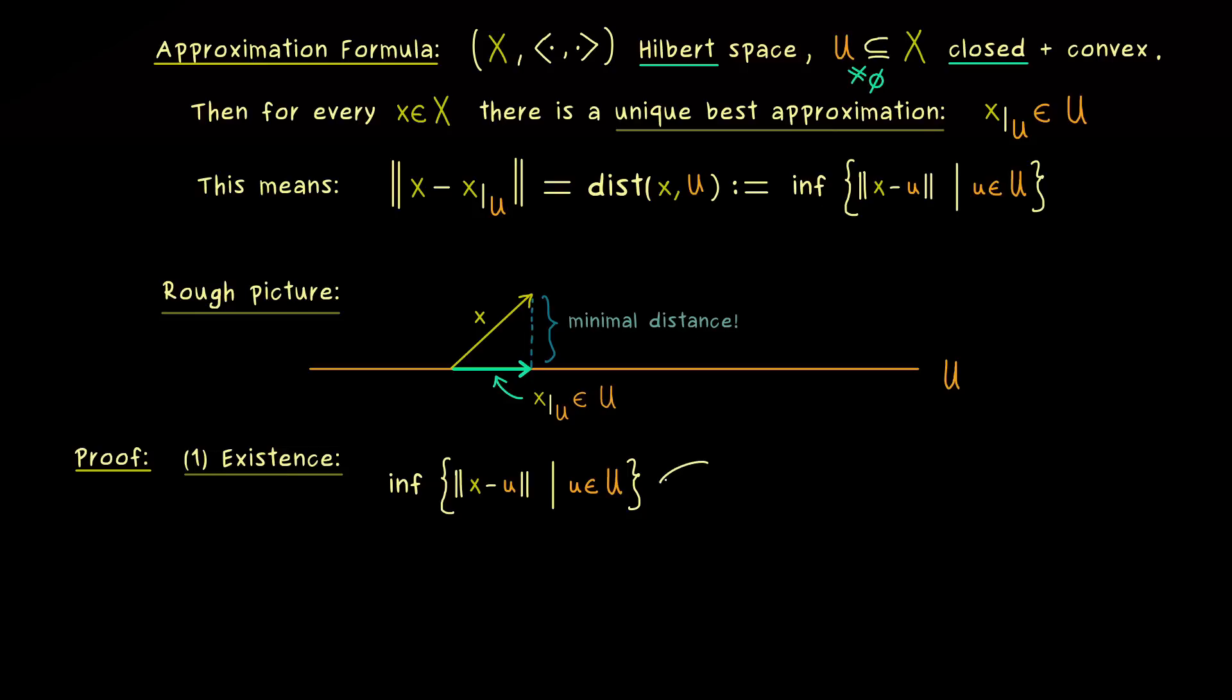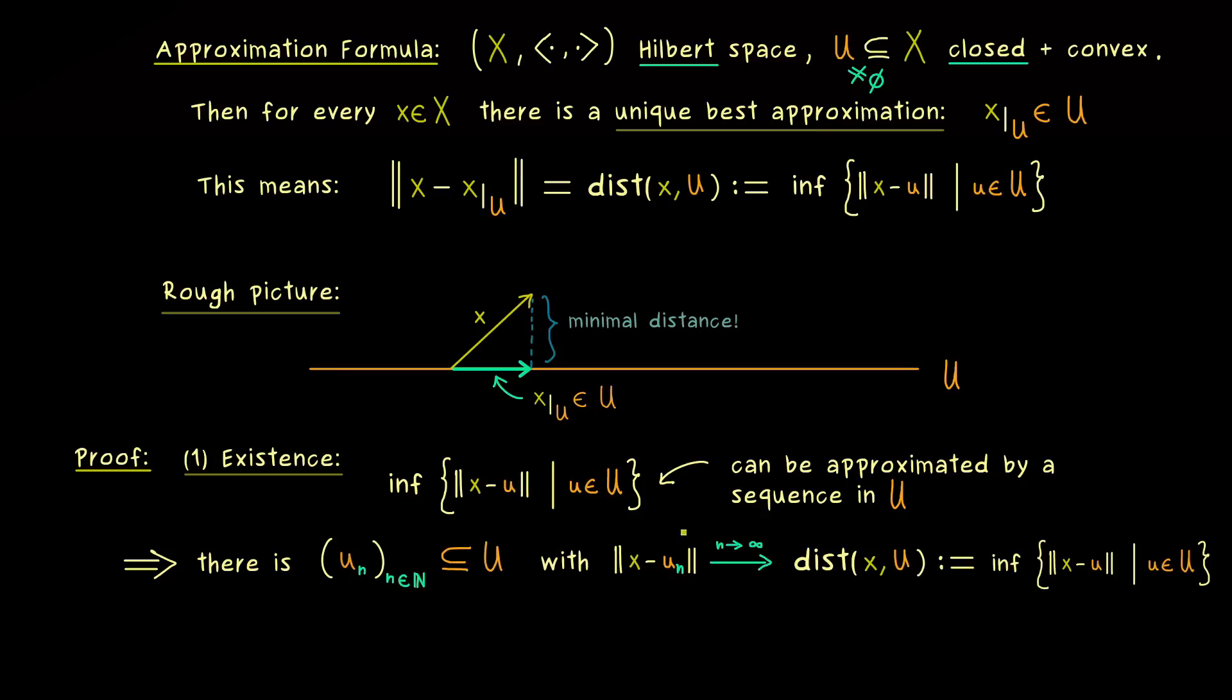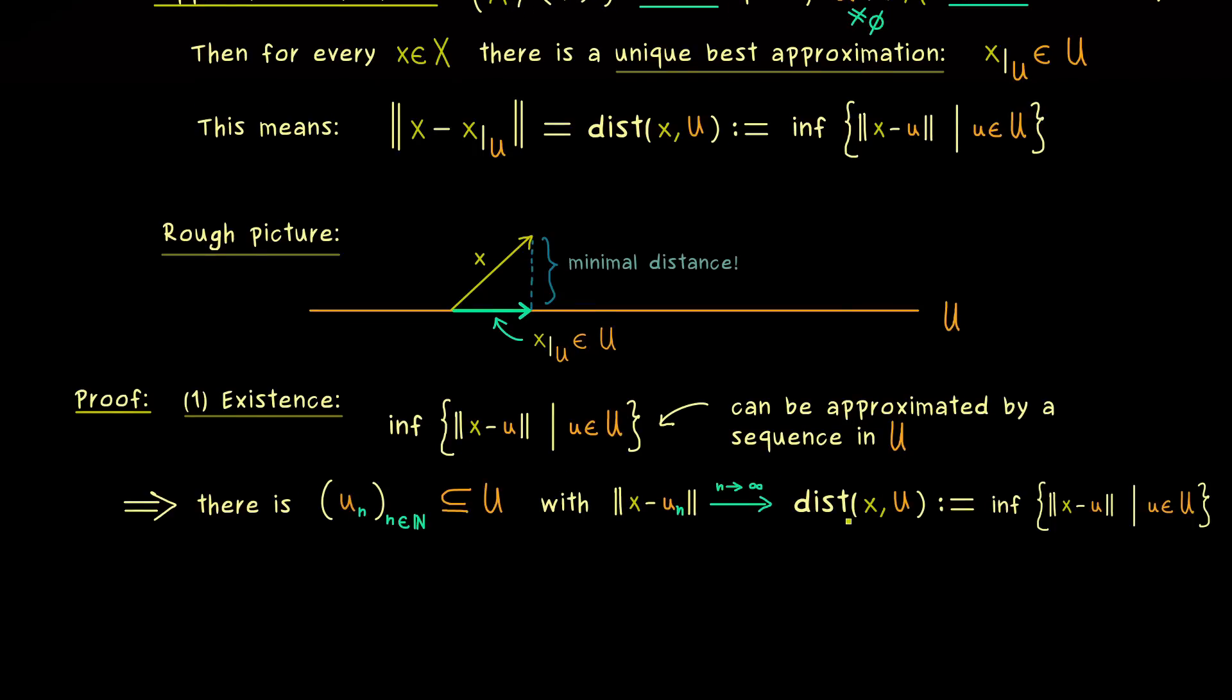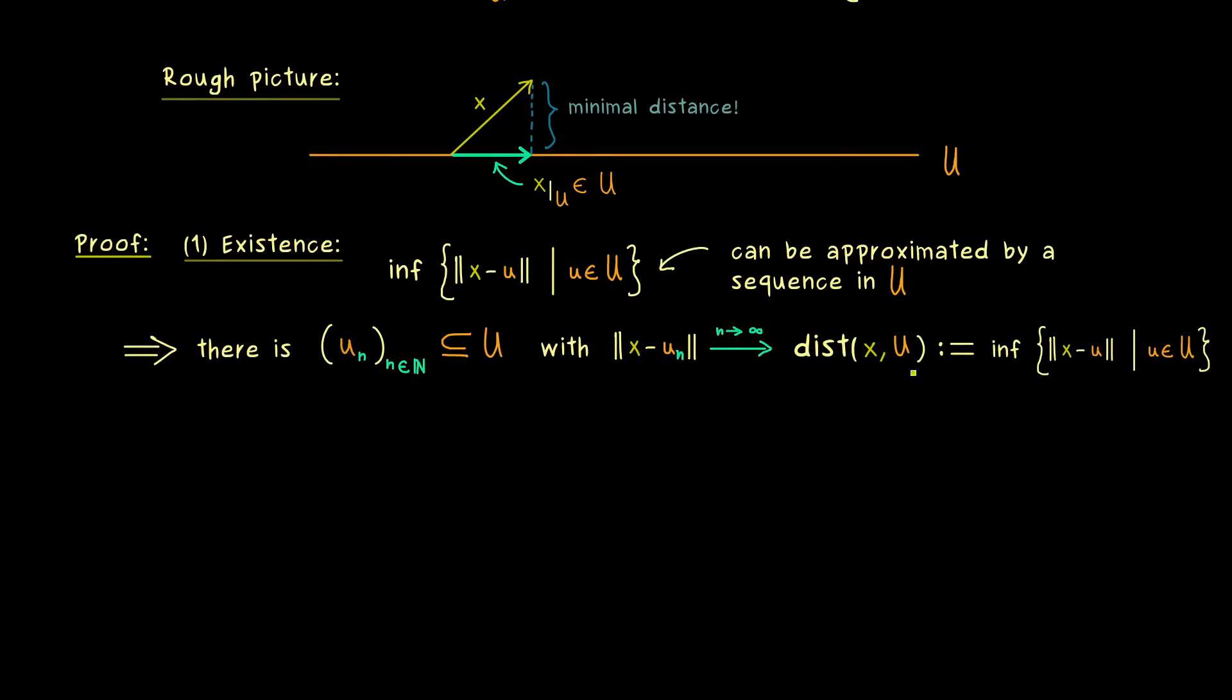Okay, but now this implies that the infimum can be approximated by a sequence in U. So this means we can find such a sequence and call it u_n. And now most importantly we don't have to assume that this sequence is convergent at all. We just know that the elements lie completely in U and that the norms here converge to the infimum. Indeed this immediately follows by the definition of the infimum. And here please never forget, this infimum is what we call the distance between the vector x and the subset U. Okay, so now we have the existence of such a sequence and now with that one we can calculate more.